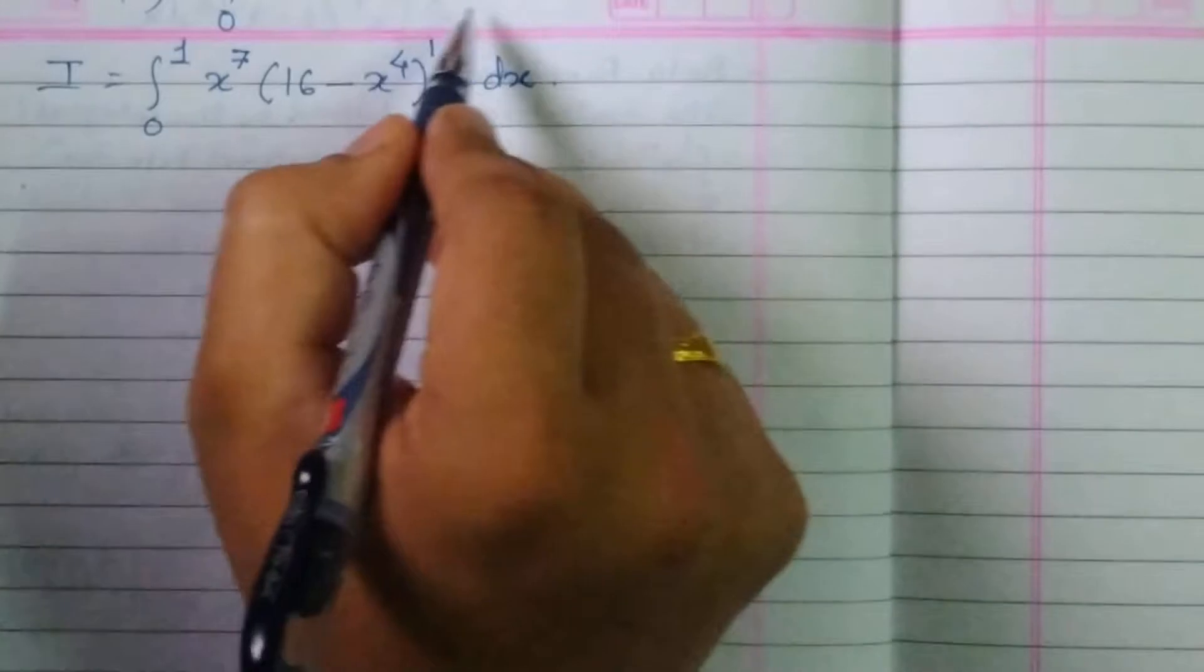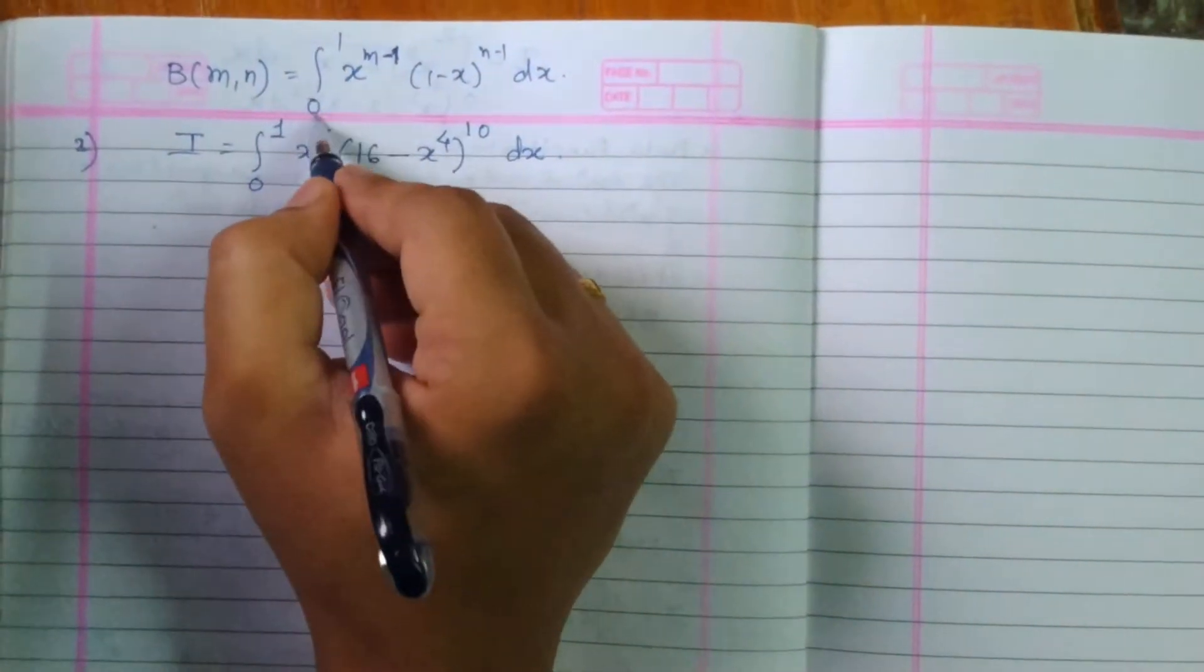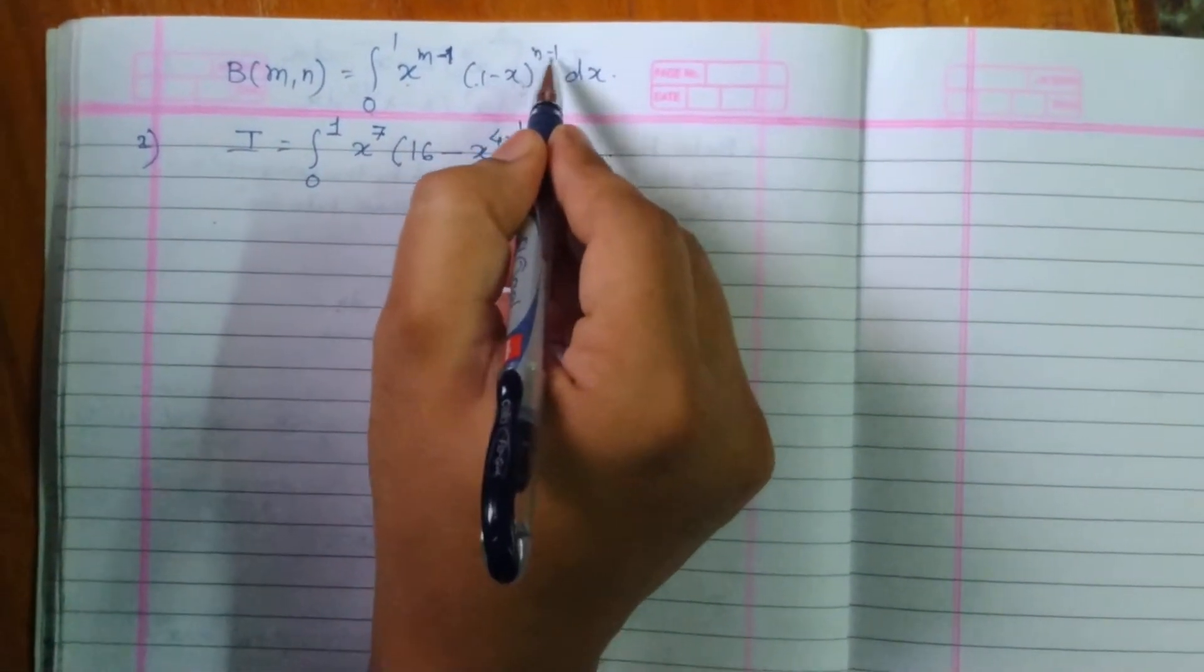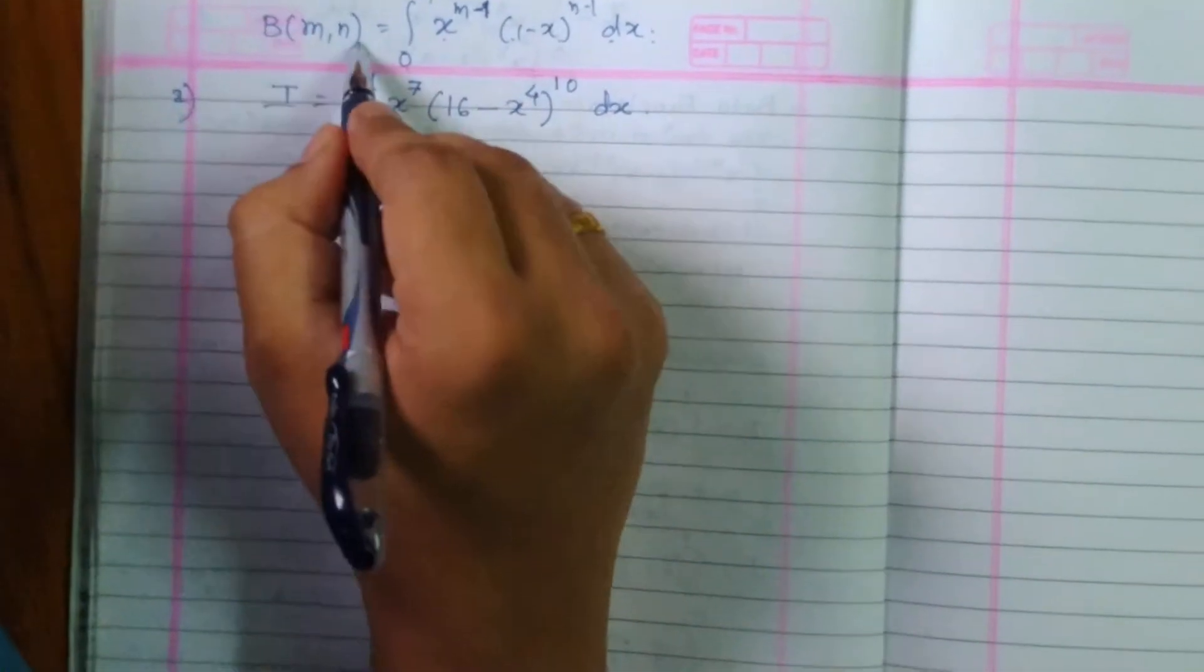We will like to revise the definition first. Integration from 0 to 1, x raised to m minus 1 times 1 minus x raised to n minus 1 dx, is nothing but beta of m, n.